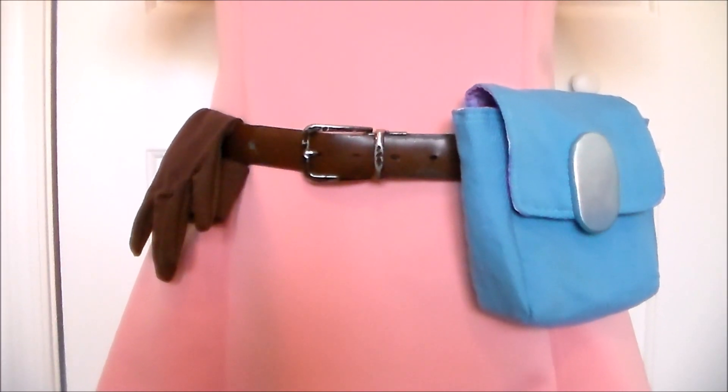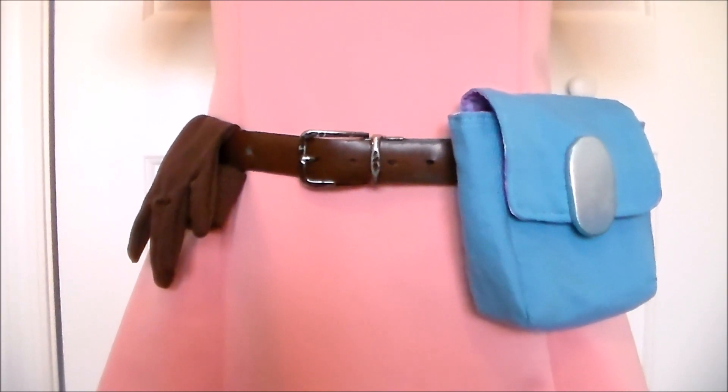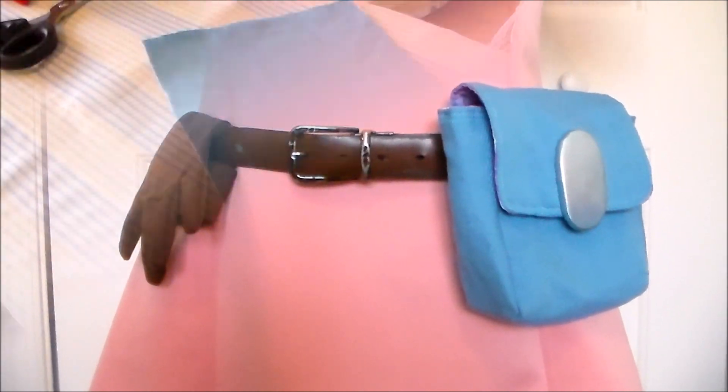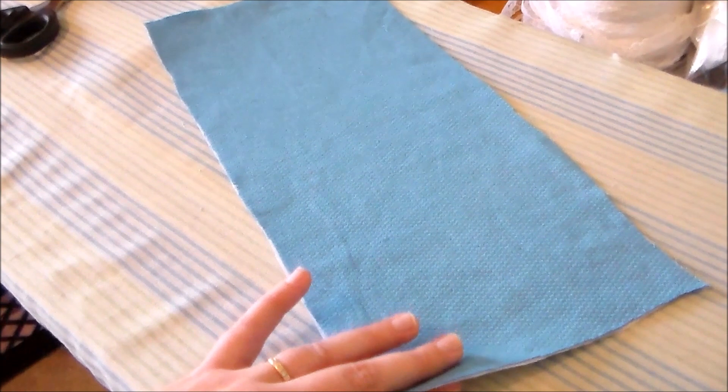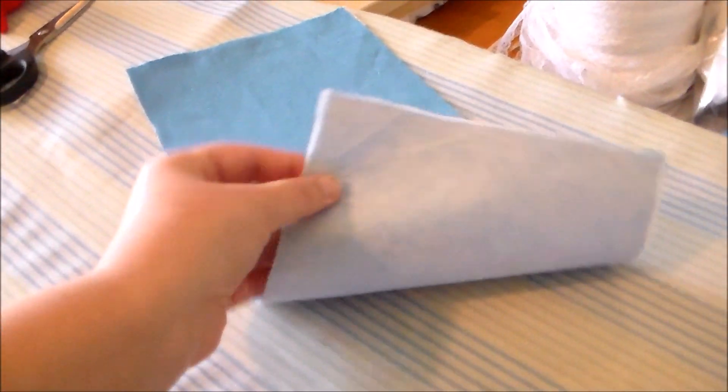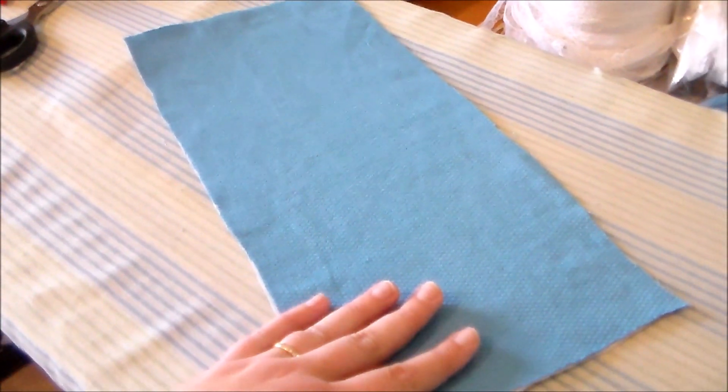Hello, it's Susan here from Komori no Hime Cosplay and today we're going to be making Bulma's pouch. To make Bulma's bag we're going to start by cutting a rectangle out of some blue fabric and apply some fusible interfacing to the back of it.